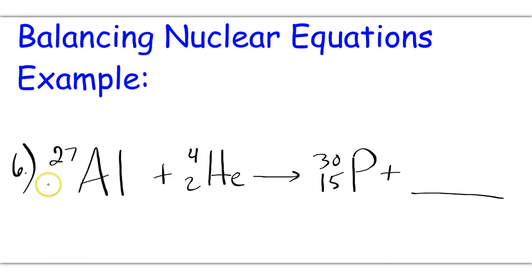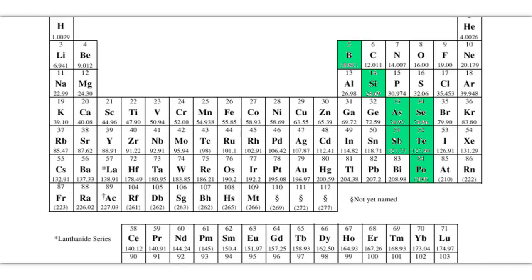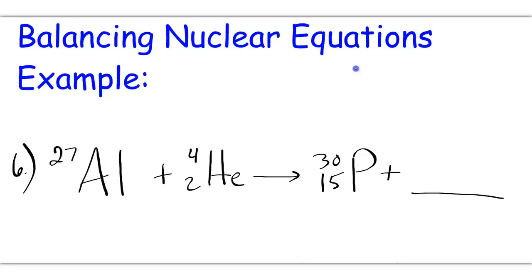First of all, I am missing an atomic number here, so I will go to the periodic table and locate aluminum. Notice here is its atomic number, 13. So I will place 13 here.